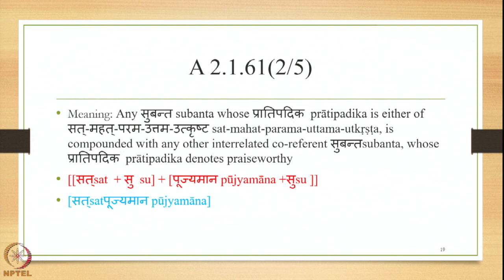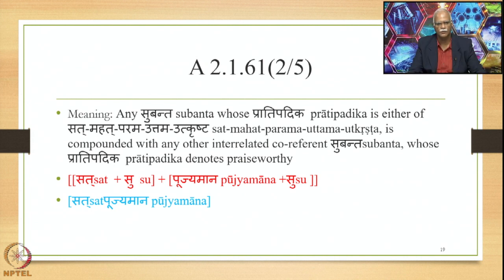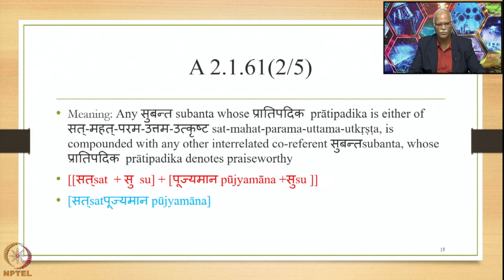The meaning is: any Subanta whose Pratipadika is either Sat, Mahat, Param, Uttama, or Utkhrishta is compounded with any other interrelated co-referent Subanta whose Pratipadika denotes the praise-worthy. So we have Sat plus Su and Poojjamaana plus Su as input, and Sat Poojjamaana as the compound Pratipadika.